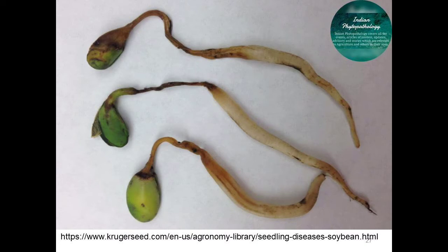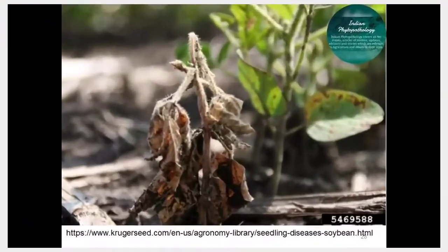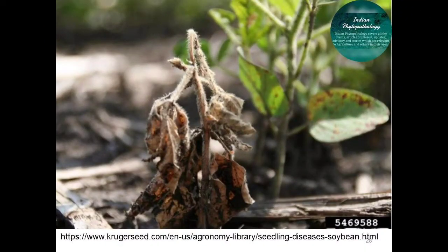The fungal pathogens involved in seed rot are Pythium, Phytophthora, and Phomopsis. The typical symptoms of seed rot are soft decay of the seed and missing seedlings in the row or poor emergence. Similar fungal pathogens are involved in seedling mortality, showing damping-off or seedling blight symptoms.